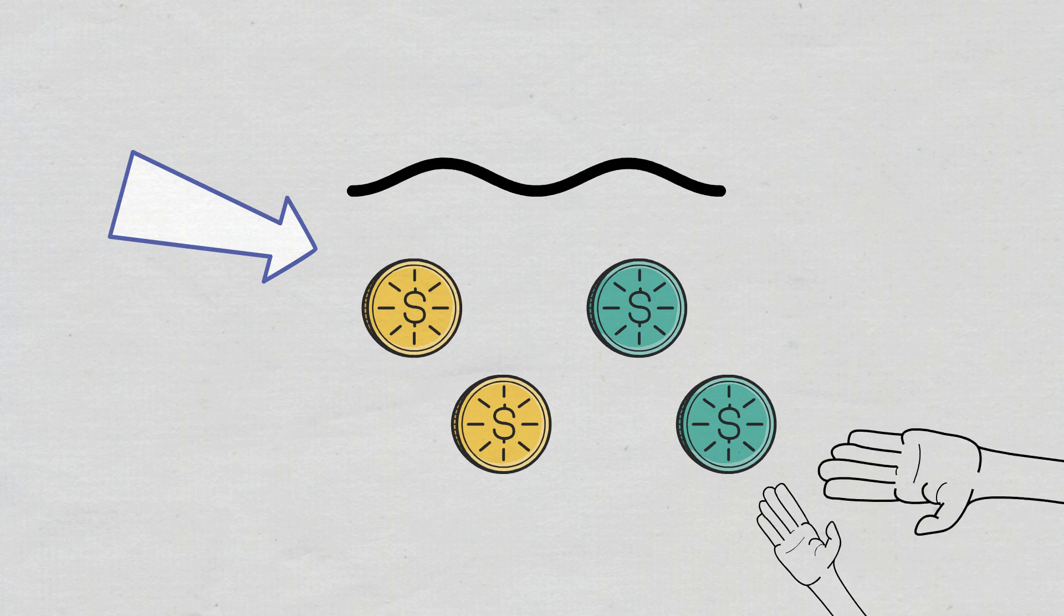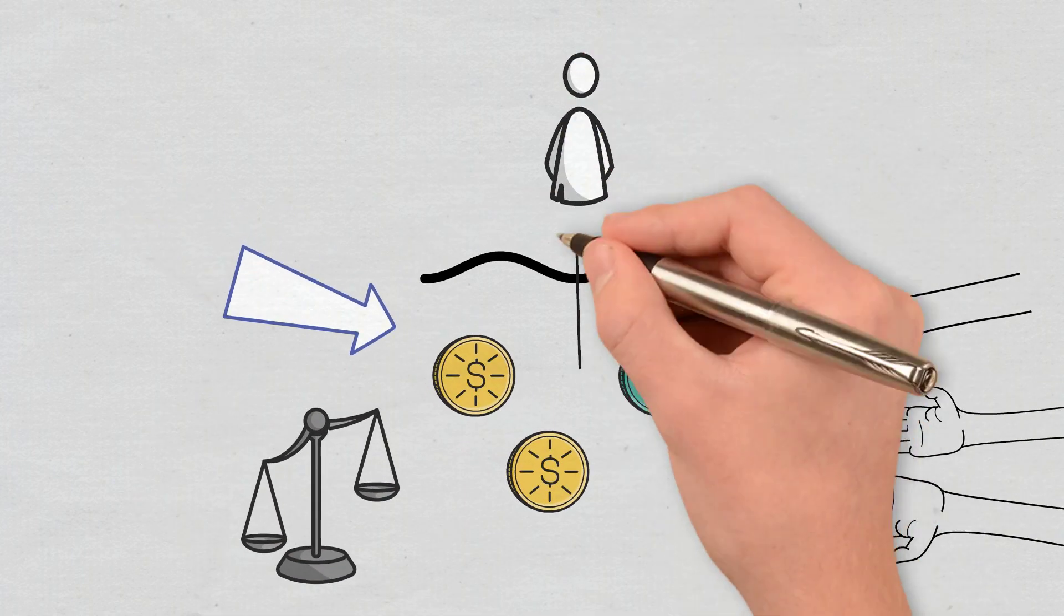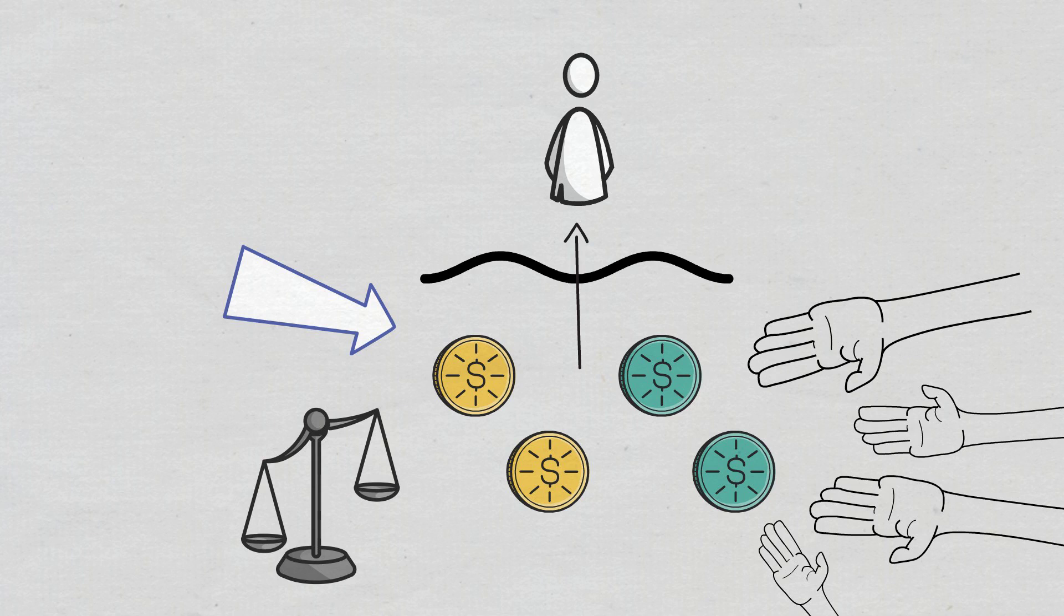If one of the tokens is more requested, then the proportion of the two assets in the pool changes. In case the provider now decides to withdraw their assets from the liquidity pool, they risk not recovering the entire amount and in the proportion in which they have deposited it.